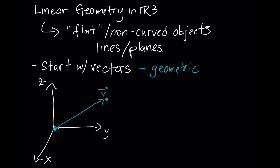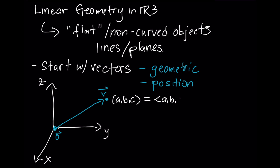Remember that a vector is a directed line segment. If we talk about a position vector, that means we are taking the one special case where we put the tail of the vector at the origin. That tip of the vector ends up at some location, and the coordinates of the point are exactly the same as the components of the vector. This allows us to make the following interpretation: vectors are points in R3.